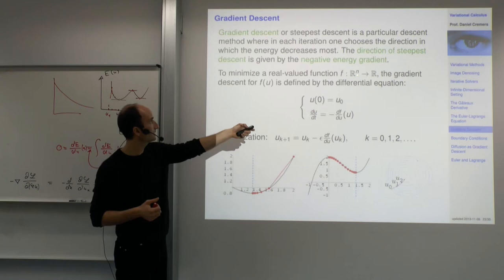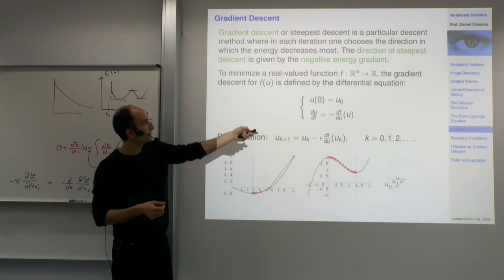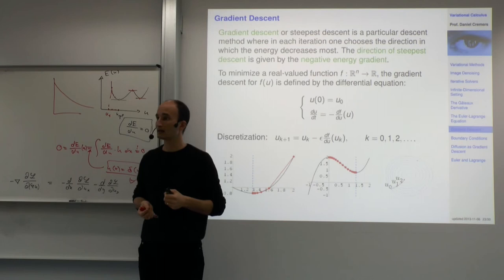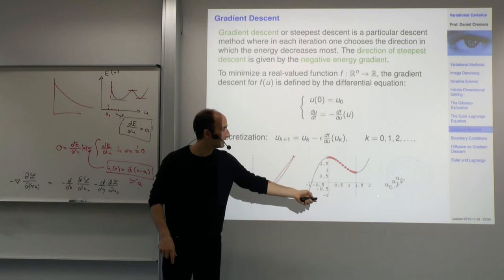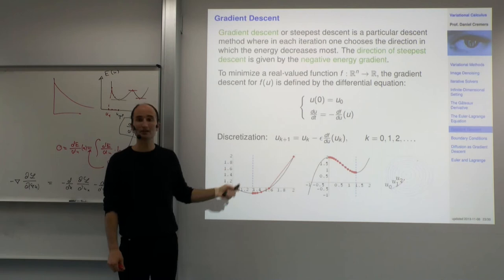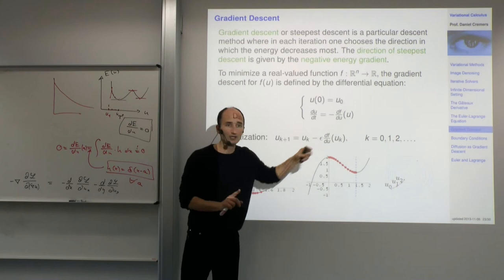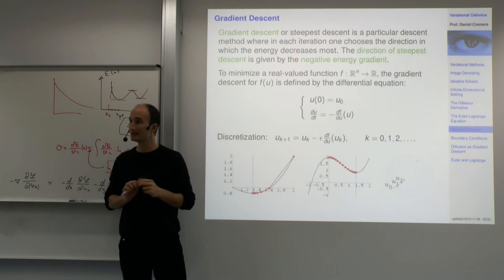Consider some function on R^n mapping to R. The only difference with variational calculus is that we consider infinite-dimensional spaces, but the ideas are the same. You have multiple directions — for example, two degrees of freedom. The gradient df by du points in the direction of steepest ascent, and consequently minus df by du points in the direction of steepest descent.